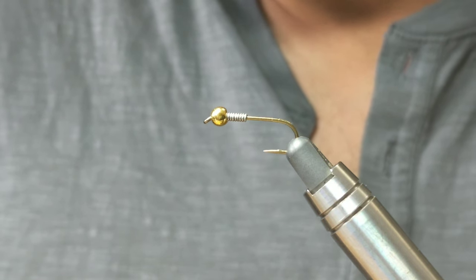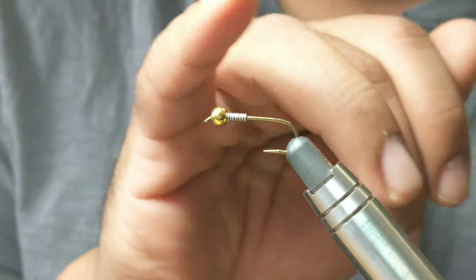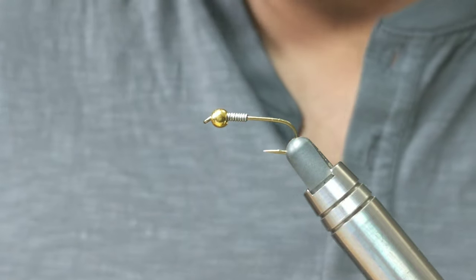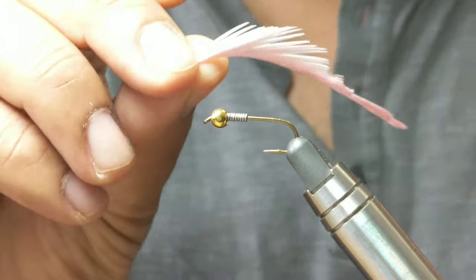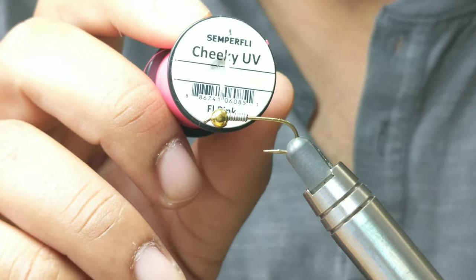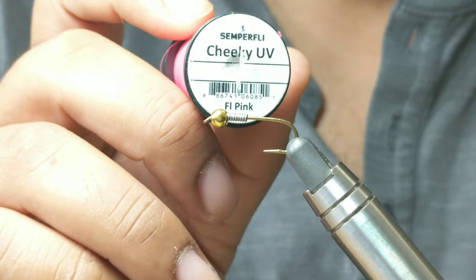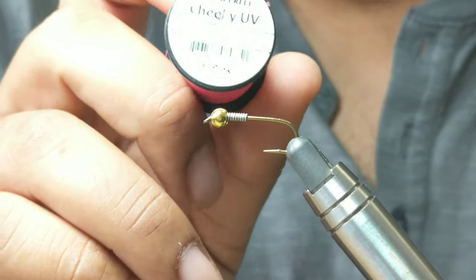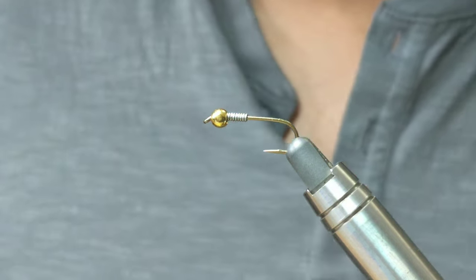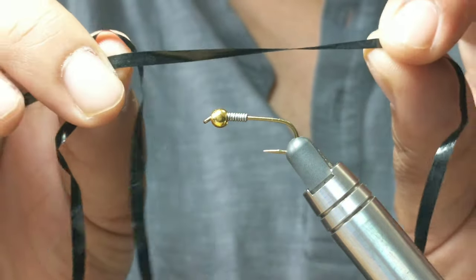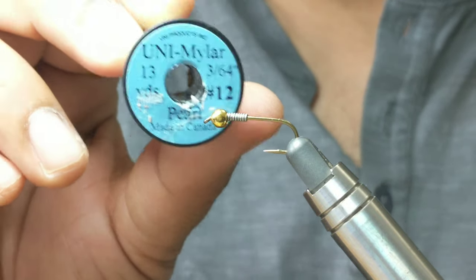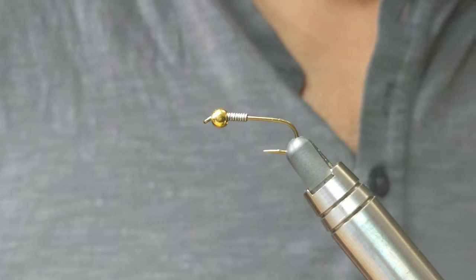If you want to tie along, here's some of the materials you're going to need. Get your hook, your bead, throw on some 0.020 or even 0.025 wire—whatever you have on hand. We're going to need some pink goose biots, cheeky UV fluorescent pink—this stuff's awesome but you could also use regular steelhead flashy dubbing. We're using medium silver wire for ribbing and some black scud back.